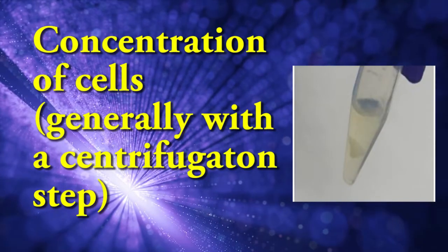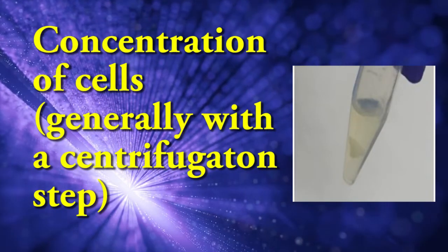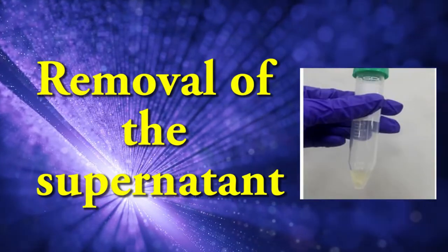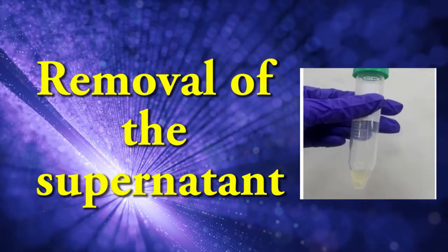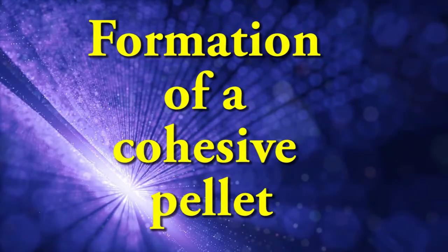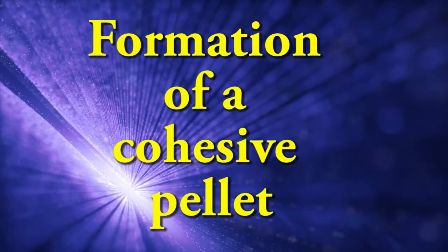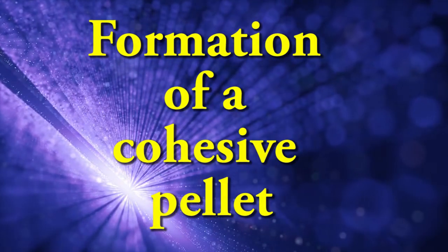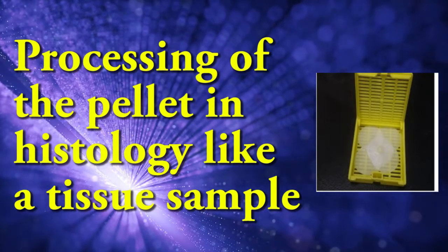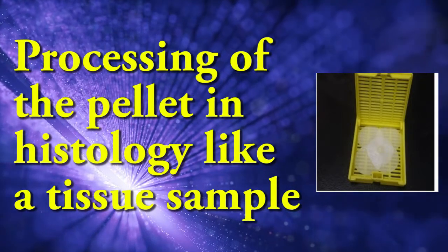The process involves concentration of cells, generally with a centrifugation step, removal of the supernatant, formation of a cohesive pellet, and processing of the pellet as a histology tissue sample.